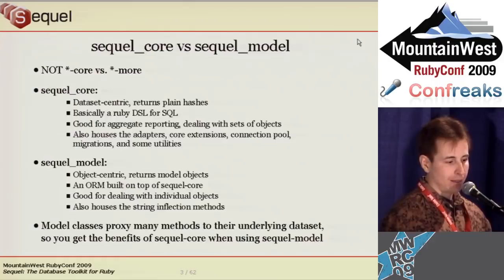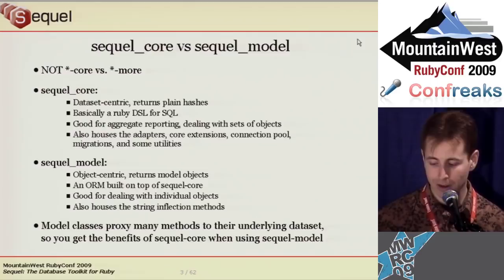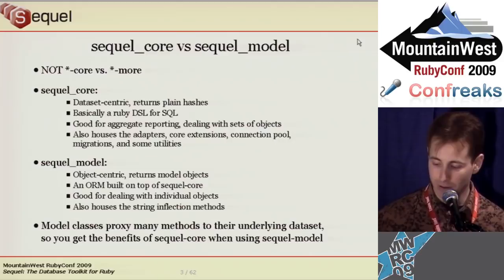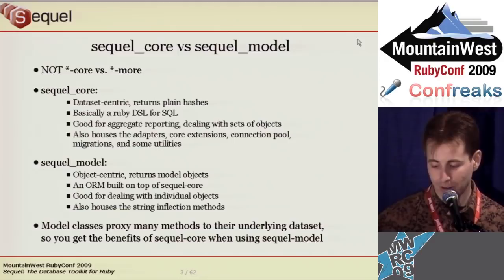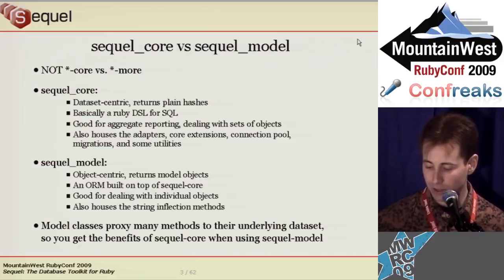Now Sequel is split into two parts: core and model. This is different than the DM core/more split, where more adds features to core. Sequel core is a Ruby interface to an SQL database — great for generating reports or dealing with sets of rows. Sequel model is an ORM built on top of core. Model classes are backed by core datasets, so you get the benefit of core when using model. Model depends on core, but core does not depend on model.